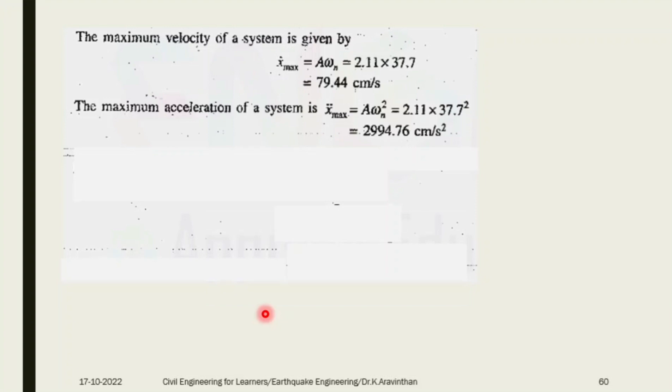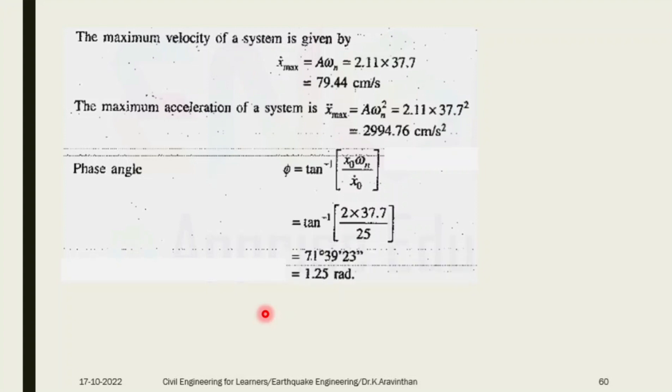Your unit should be: when finding velocity it should be in centimeters per second, and acceleration in centimeters per second squared. Phase angle φ formula is tan inverse of x₀ωn divided by x dot. Tan inverse of 2 times 37.7 divided by 25 equals 71 degrees 39 minutes 23 seconds. You can also write in terms of radians.